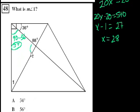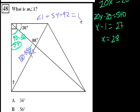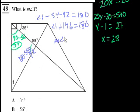And now this angle right here, that's going to be the supplement of 88. So this is going to be 180 minus 88, that is equal to 92 degrees. Now angle 1 plus the 54 plus the 92 is equal to 180. So angle 1 plus 54 plus 92 is equal to 180. 54 plus 92 is 146, which is equal to 180. Subtract 146 from both sides, the measure of angle 1 is equal to 34 degrees. So the answer is A.